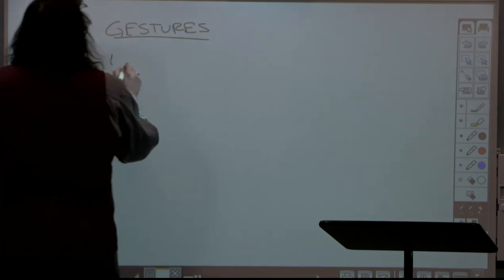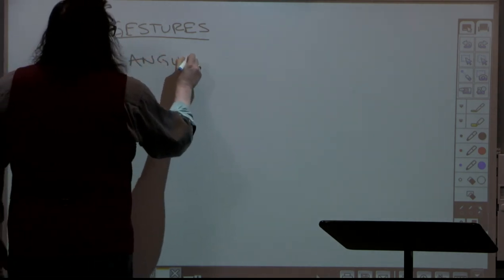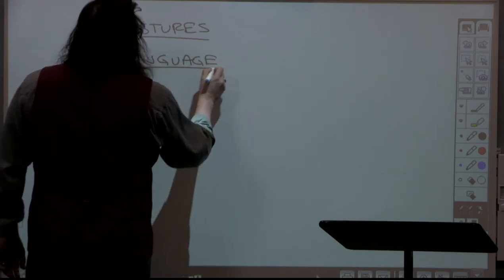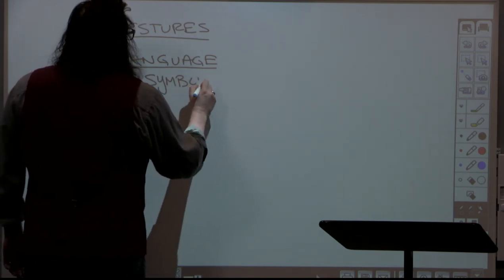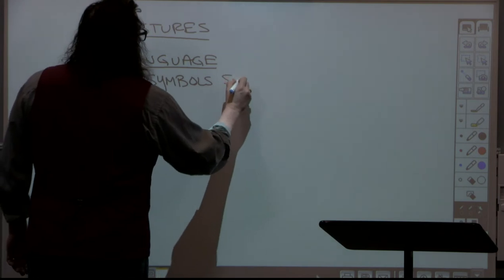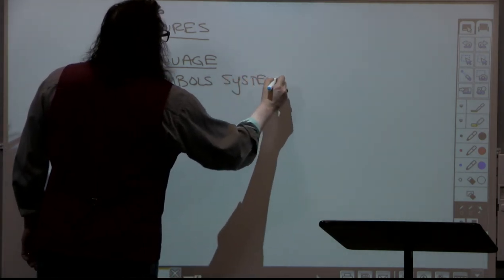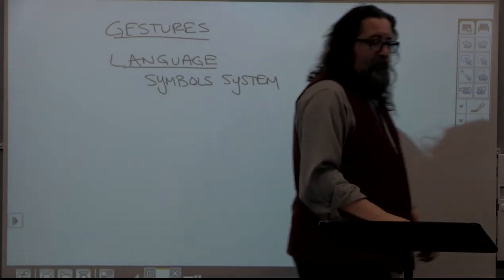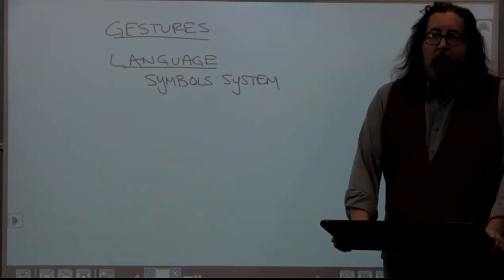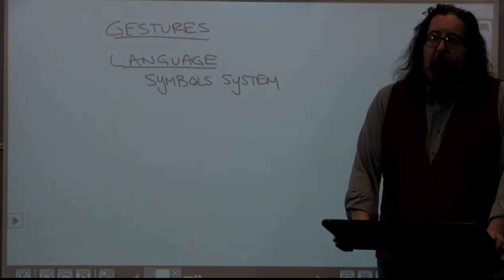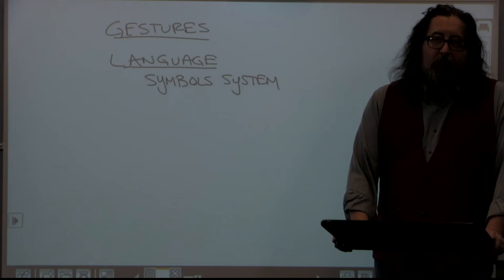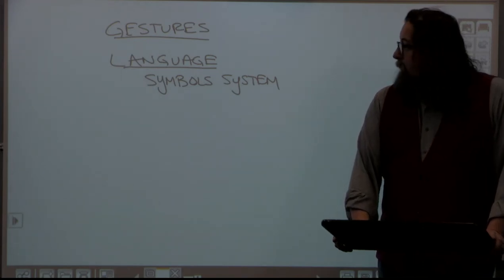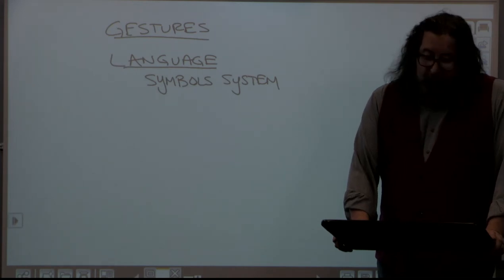Another component of symbolic culture is language. We know that language is basically a system of symbols. Using English as an example, the most basic system of symbols is our alphabet — A, B, C, D, E, F — and we combine those symbols to make words, combine words to make sentences, and combine sentences to come up with ideas. So language is definitely a system of symbols.